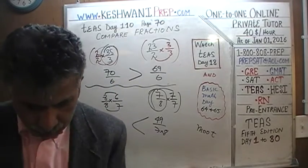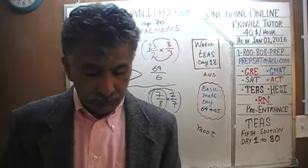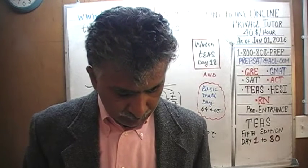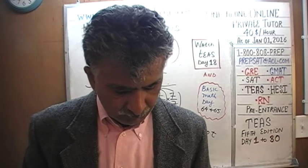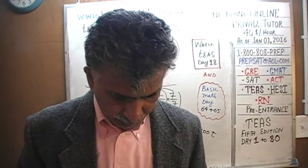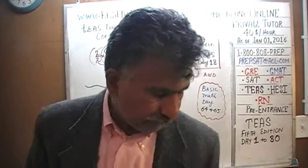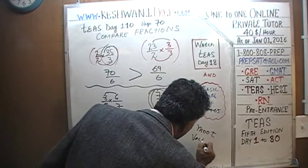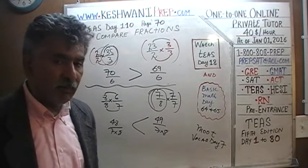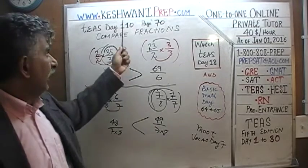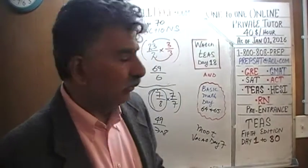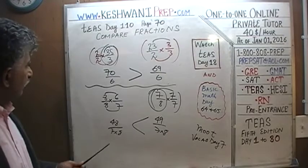So the answer there was that thirty-five over three is bigger than twenty-three over two. In case you're wondering what 'moot point' means — if you're interested in building your vocabulary — we covered that term on vocabulary day seven. Just type in 'Keshwani vocabulary day seven' and the video will come up.